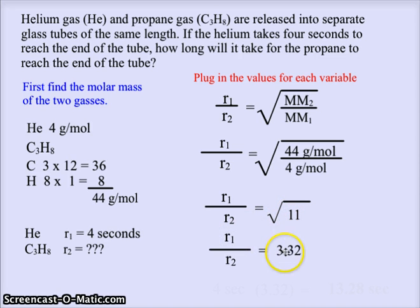R1 over R2 has a ratio of 3.32. Now, because we know the helium takes four seconds, and helium is the faster gas because it is the lighter gas, we know that four seconds has to be multiplied by the ratio, 3.32, to give us 13.28 seconds for the propane to travel that same length of the tube.